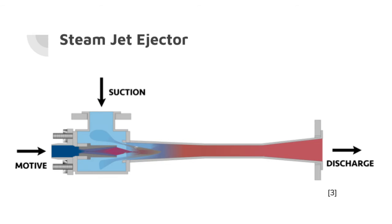Steam jet ejectors utilize a high velocity steam jet to force material from a low pressure area to a higher pressure area. Ejectors were used on steam locomotives to force water back into the boiler, and are still used in industry today.